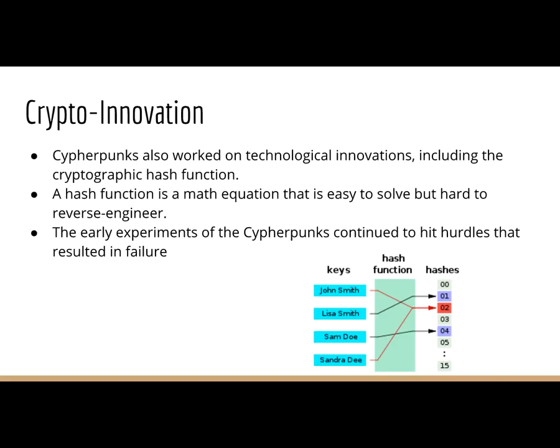Despite all of these different experiments in the eighties, nineties, and late nineties, all of them continued to hit hurdles that resulted in failure. But importantly, every single one contributed to cryptography and to innovation, and they were important steps that eventually allowed for the creation of Bitcoin.